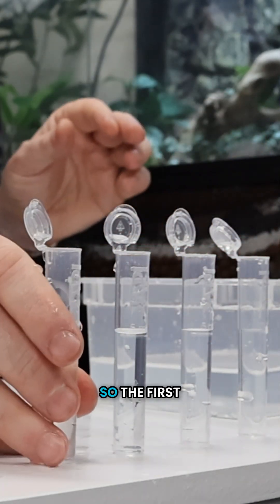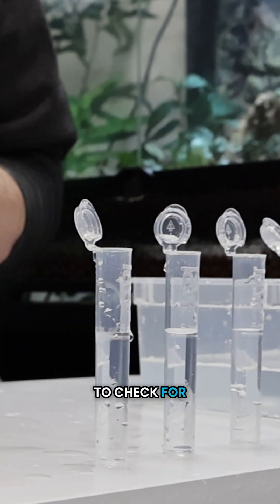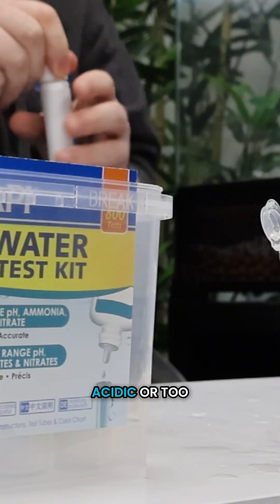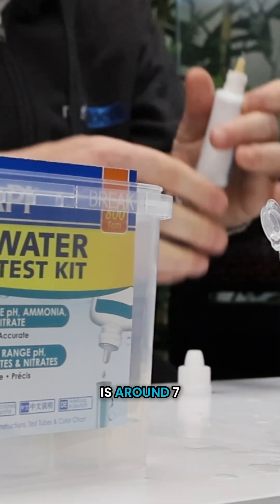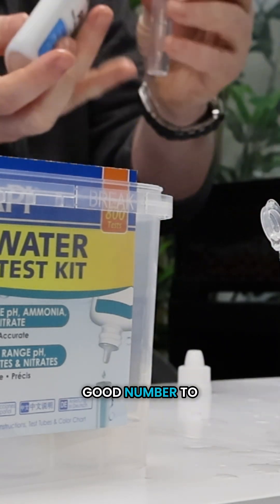The first parameter I'm going to check for is the pH. The water doesn't want to be too acid or too alkaline. A neutral pH is around seven—seven is a good number to aim for.